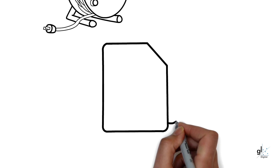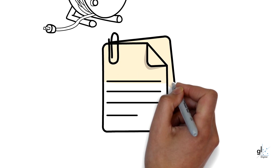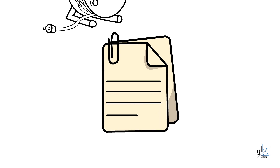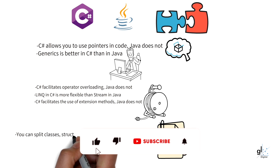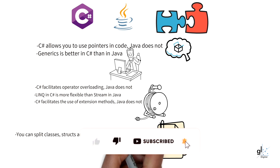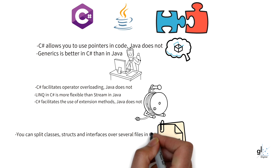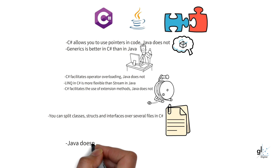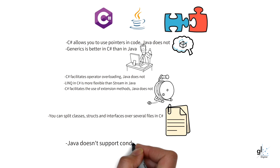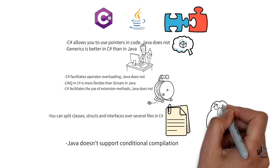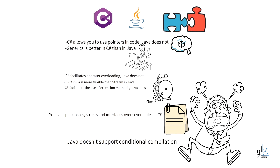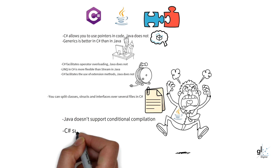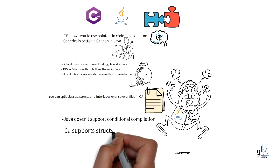C-Sharp allows you to split a class, struct, or interface over several files — these are called partial classes. Partial classes make it easy for several developers to work on the same class, where each developer can add functionality by adding code to separate files, allowing developers to collaborate on the same class while working independently. Java doesn't provide support for conditional compilation, whereas C-Sharp provides this through preprocessor directives. C-Sharp supports a value type known as a struct, which is far more memory efficient than a class. At present, there is no equivalent to a struct in Java.